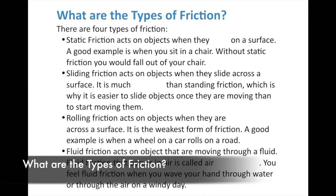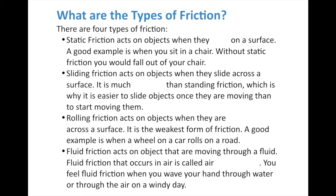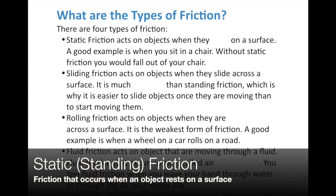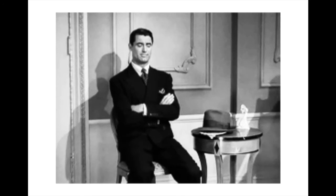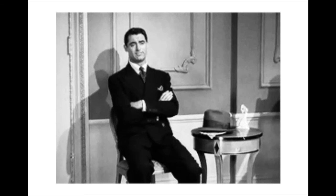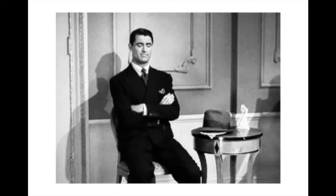Let's wrap up this lesson by talking about types of friction. There are four main types. The first is static friction — also called standing friction. Static friction acts on objects when they rest on a surface; it's what keeps things from sliding around at rest. A good example: when you sit in a chair, without static friction you'd slip right out. Gravity pulls you down, and static friction holds you in place — until it fails, like that guy who slipped.